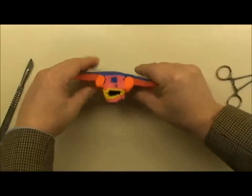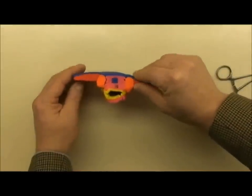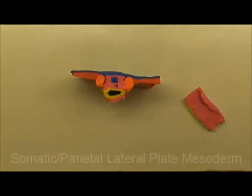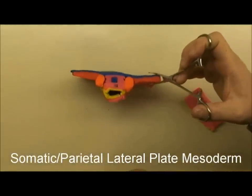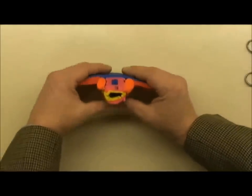So that we're left with the gut tube hanging out ventral to the notochord. And now the same process is going to happen with this layer that's in contact with the ectoderm. This layer is called the somatic or parietal lateral plate mesoderm.